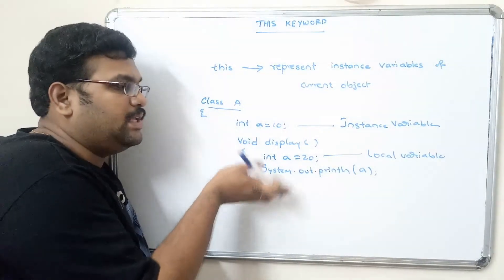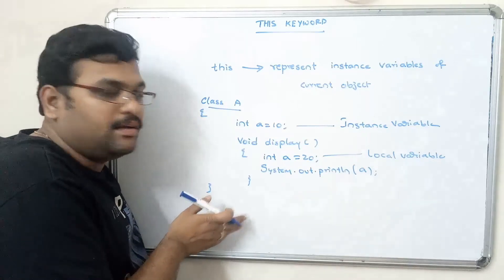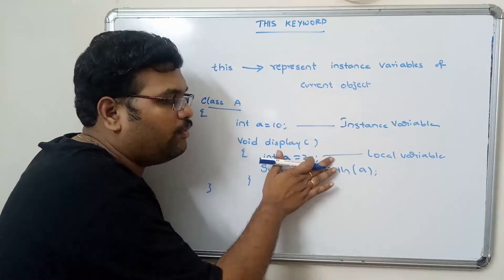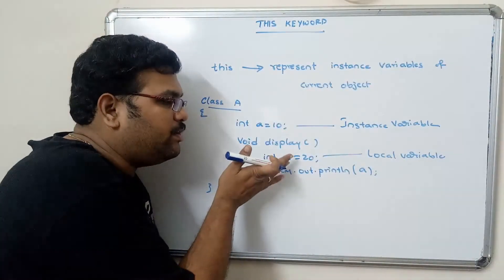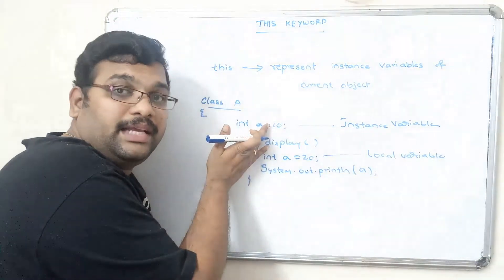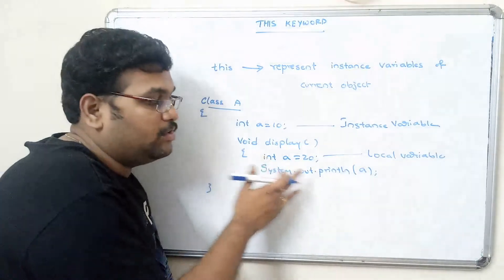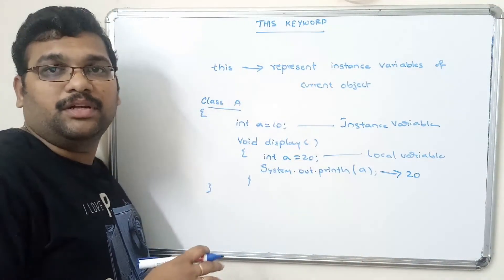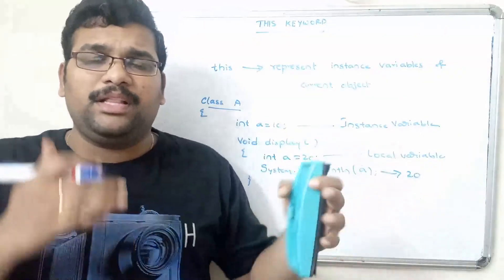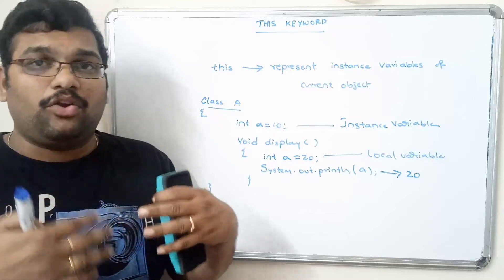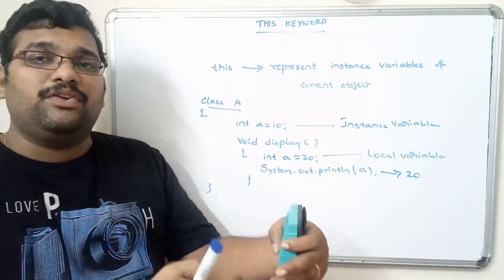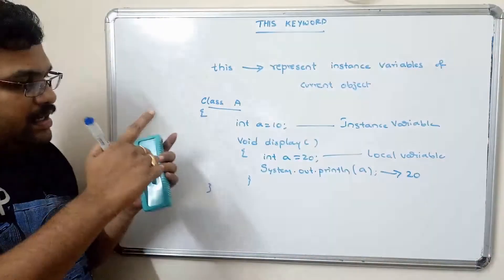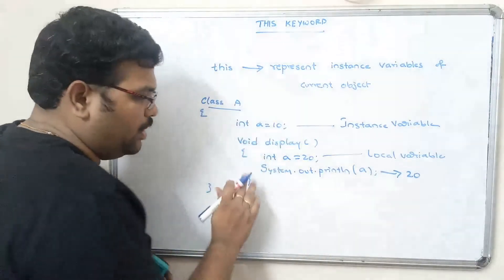The method can access both instance variables and local variables. Previously, when there was no local variable, printing 'a' would give 10. But now with two variables sharing the same name, the first preference is given to the local variable, so 20 will be displayed. This is similar to global and local variables in C, but unlike C, in Java we can print both by using the 'this' keyword.